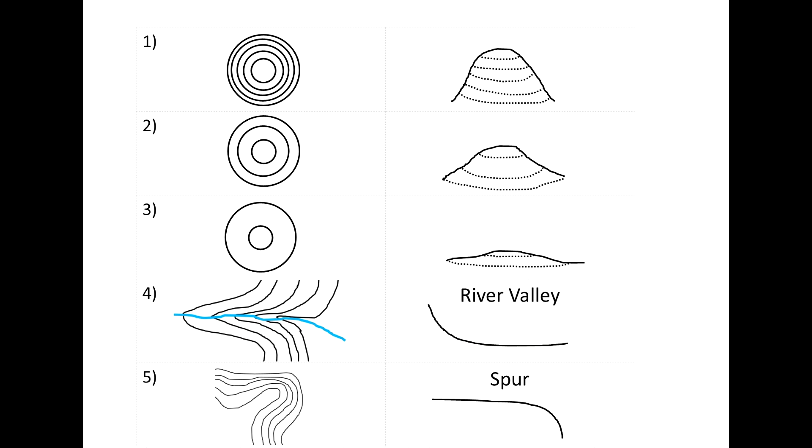How can we interpret relief? On ordinance survey maps, there are brown lines called contour lines, and the distances between them varies from 5 to 10 metres. For this video, we will assume that the distance in between contour lines represents 10 metres.